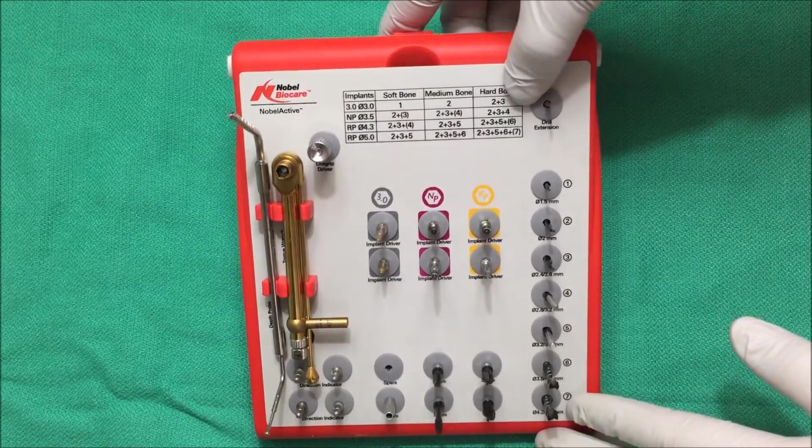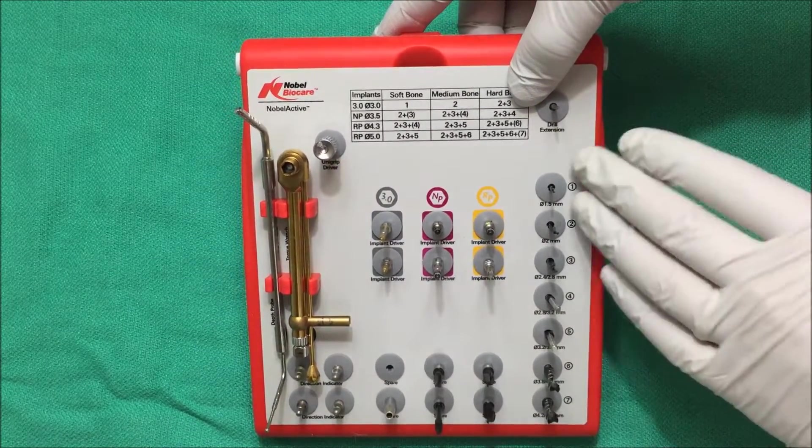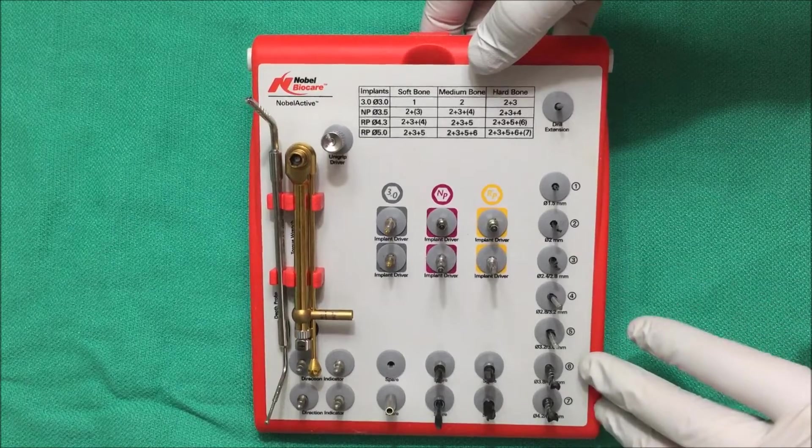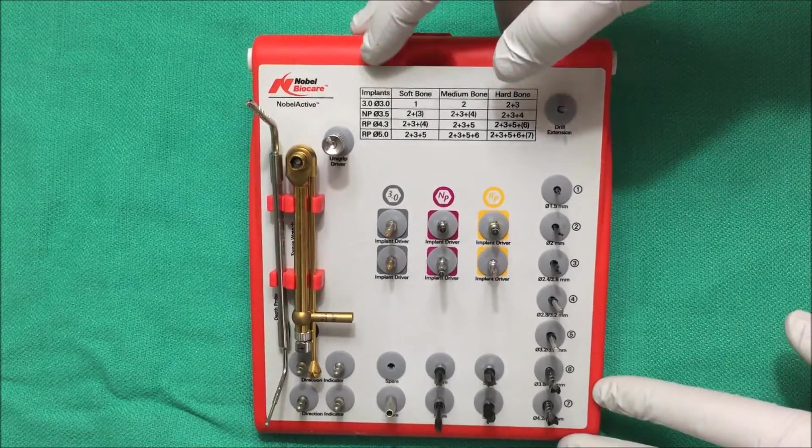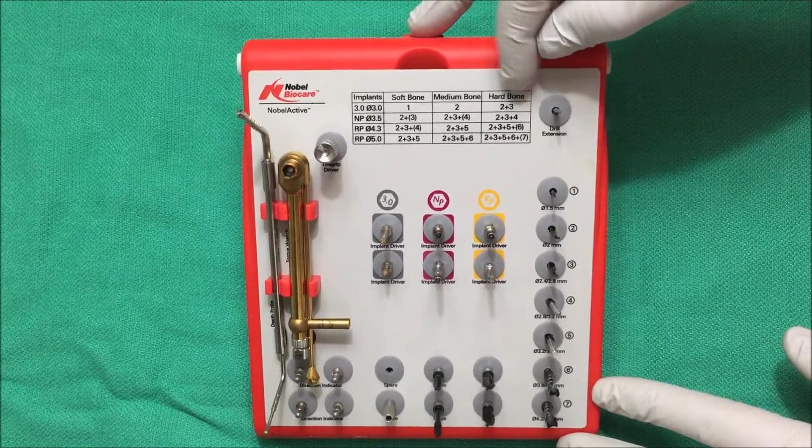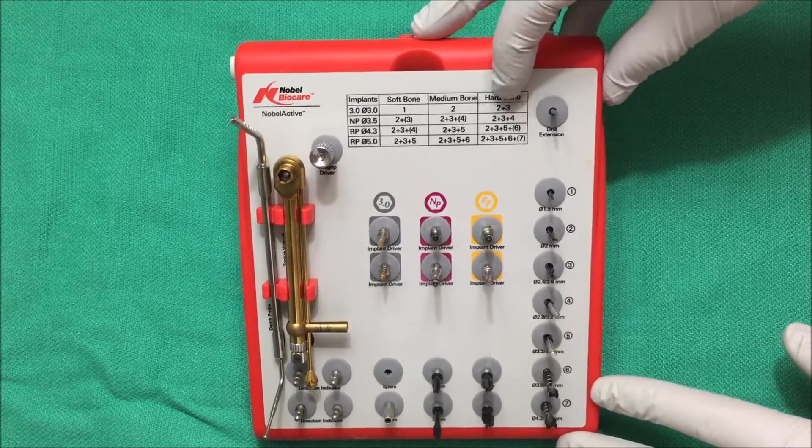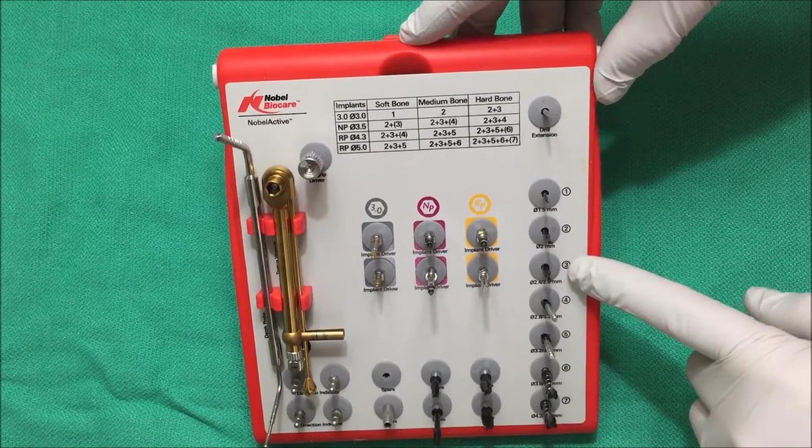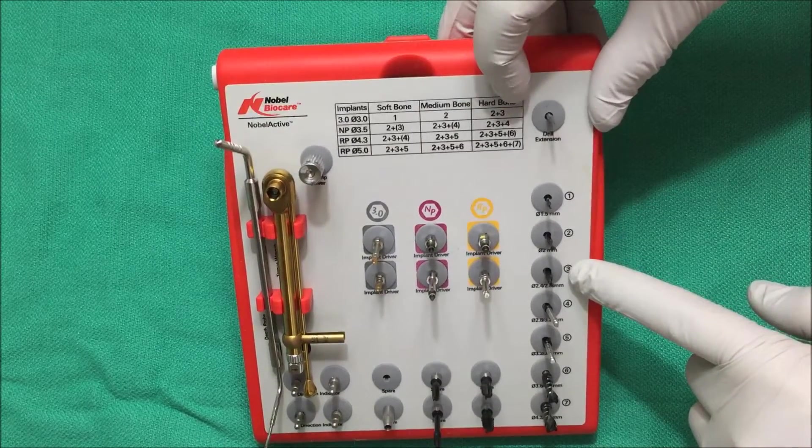So here you have this handy little reference chart for which osteotomy drills to use in different scenarios. So for example, let's take this first row 3.0 in hard bone. So what that says is 2 plus 3. That means that you're going to use drills 2 plus 3 when you're placing a 3.0 implant in hard bone.